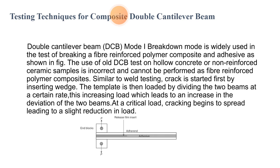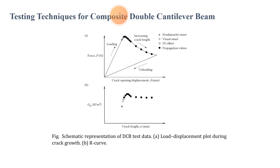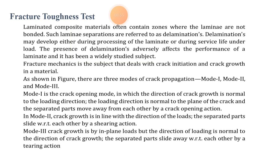Similar to wedge testing, a crack is started first by inserting wedges. The specimen is then loaded by separating the two beams at a certain rate. This increasing load leads to an increase in the deflection of the two beams. At a critical load, cracking begins to spread, leading to a slight reduction in the load. The first graph shows crack opening displacement versus force in Newtons under loading and unloading conditions. The second graph shows crack length versus Gc. These represent the load-displacement plot and the R-curve.